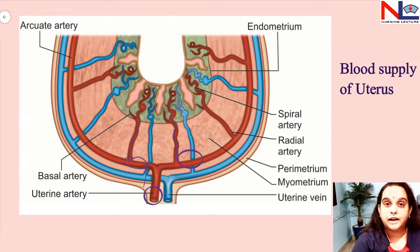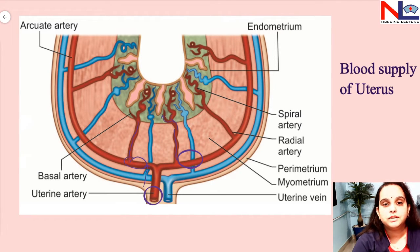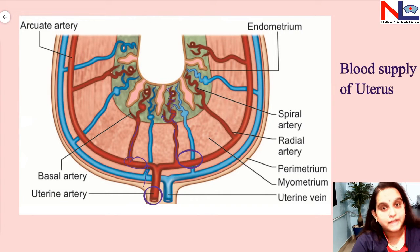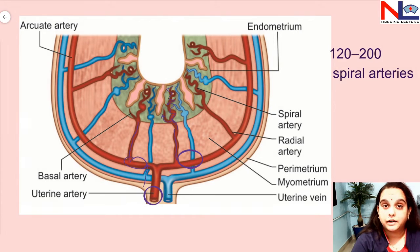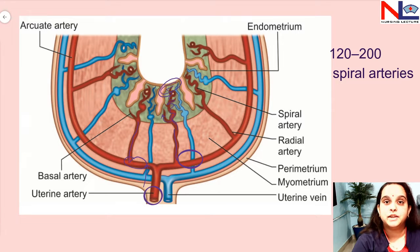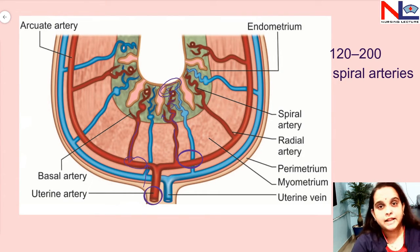Within the myometrium, the arcuate artery branches off to form the radial artery. The radial artery then pierces the innermost lining of the uterus — the endometrium — and branches again: one branch forms the smaller basal artery and the other forms the spiral artery. The spiral artery basically supplies the decidua, which is the endometrium of the pregnant uterus. There are 120 to 200 spiral arteries that pierce the basal plate, which is the inner lining of the placenta forming the decidua basalis.